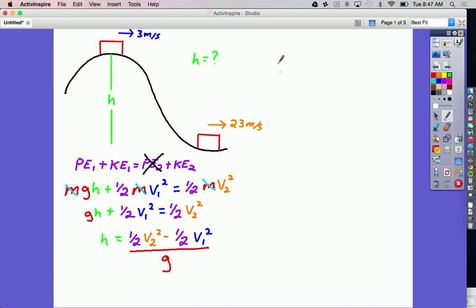And the way that will look, h is going to equal 1/2, v2 is 23 meters per second and we're squaring that, minus 1/2 and v1 is 3 meters per second and we square that, all over 9.8 meters per second squared. Now when I plug all that into my calculator, I get a height of 26 and a half meters.